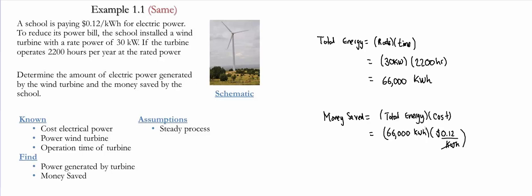So notice that this and this cancels. Therefore, the total savings are going to be equal to $7,920.